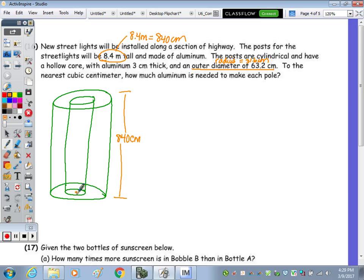So this outer radius, I just want to go to the edge of that circle right here, we have a radius of 31.6. Since our aluminum is 3 centimeters thick, the inner radius, 31.6 minus 3, gives us an inner radius of 28.6 for the smaller cylinder. So the smaller cylinder has a radius of 28.6, the larger cylinder has a radius of 31.6, both having the same height of 840 centimeters. And both of these radii are in terms of centimeters as well.